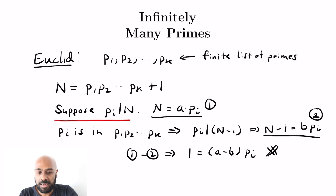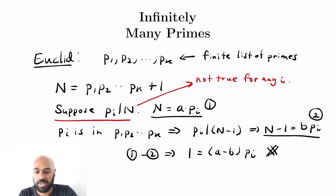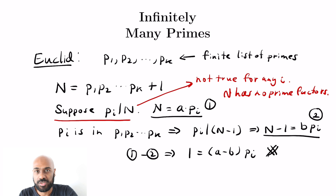So our supposition that P_i actually divided N couldn't have been the case. We put a random i here, so it's one of the random primes in our list. That actually means that none of these primes divide capital N. So capital N doesn't have any prime factors. Every positive integer has prime factors except for the positive integer 1, so this is a real problem and a contradiction.